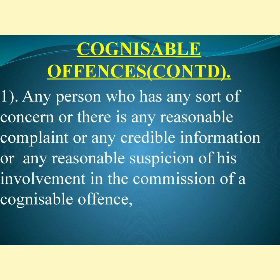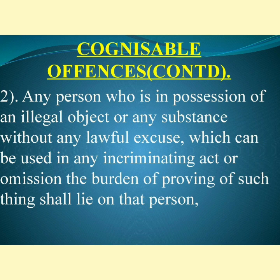Number one: any person against whom there is a reasonable complaint, credible information, or reasonable suspicion of involvement in the commission of a cognizable offense. Number two: any person who is in possession of an illegal object or substance without lawful excuse, which can be used in any incriminating act or omission — the burden of proving the lawful possession of such thing shall lie on that person.